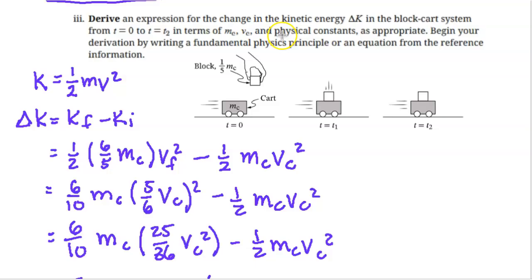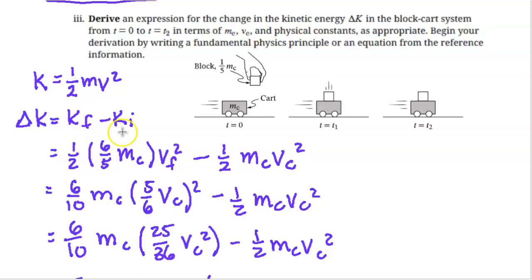Part 3i: Derive an expression for the change in kinetic energy ΔK in the block-cart system from t=0 to t=t2, in terms of MC, VC, and physical constants as appropriate. Begin your derivation by writing a fundamental physics principle or an equation from the reference information. Since we're dealing with kinetic energy, we need K = 1/2 mv². We're looking for ΔK = Kf − Ki. The final kinetic energy occurs at t=t2, when both the block and the cart are moving, so both contribute. The final kinetic energy is 1/2 × (6/5 MC) × VF².